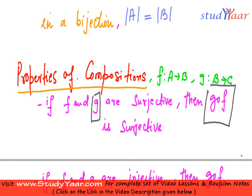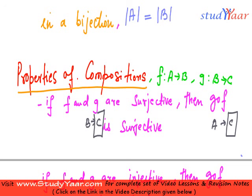then g of f is also going to be surjective because your g is from B to C and your g of f is from A to C. They have C in common. So if over here my range is equal to C, then over here also the range is going to be equal to C.